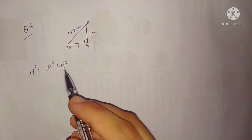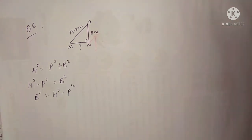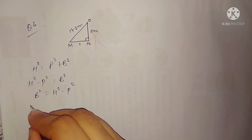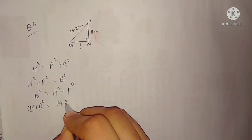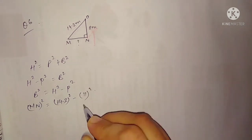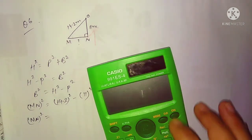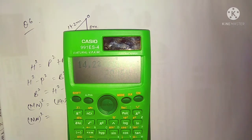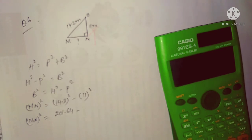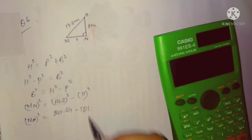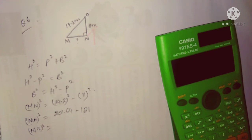Write down the Pythagorean theorem: hypotenuse squared equals perpendicular squared plus base squared. Since we need base, rearrange: base squared equals hypotenuse squared minus perpendicular squared. So MN squared equals 14.2 squared minus 11 squared. 14.2 squared equals 201.64, and 11 squared equals 121.